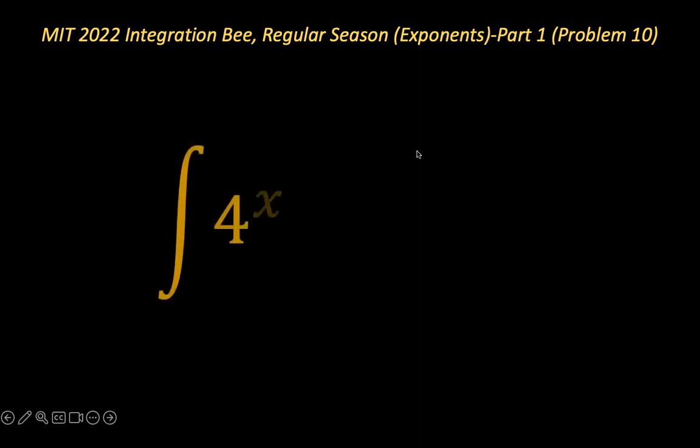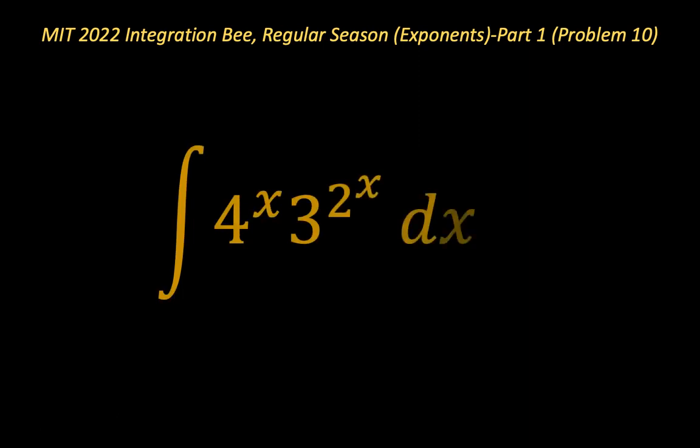Still at the MIT 2022 integration B regular season, the problem that picked our interest today was problem number 10, and we consider this as the first part of the exponents series. Problem 10 is very interesting — it's an indefinite integral of 4 to the power x times 3 to the power 2 to the power x. Very interesting problem.